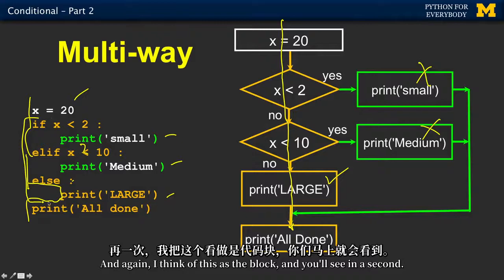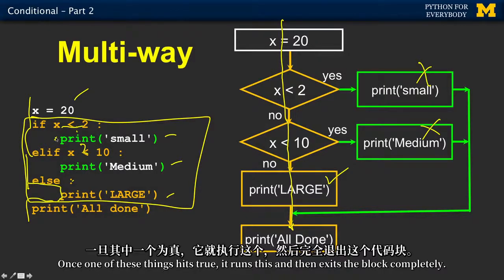The rule is one of the three will run, and the other two will not. It only triggers once. Once it's triggered, then it's done with the whole if statement. And again, I think of this as the block. Once one of these things hits true, it runs this and then exits the block completely.